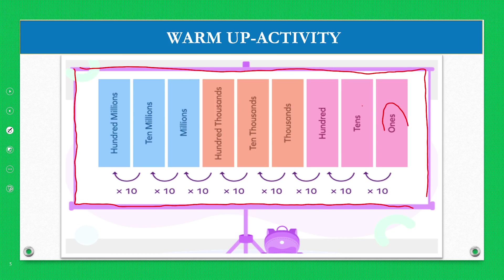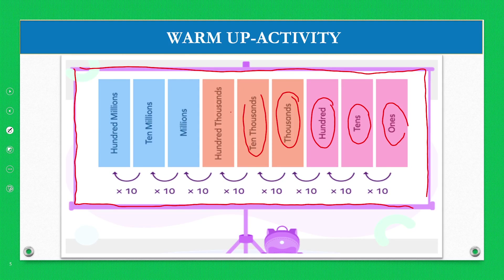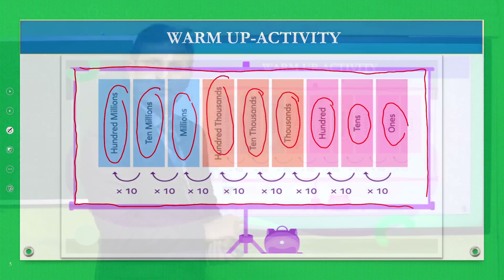The place value chart includes: Ones, Tens, Hundreds, Thousands, Ten Thousands, Hundred Thousands, Millions, Ten Millions, and Hundred Millions.